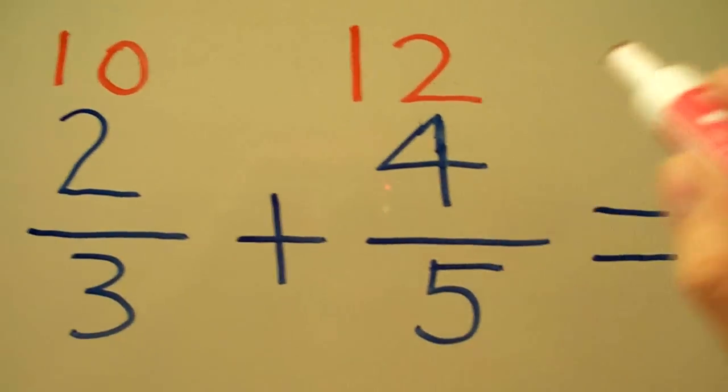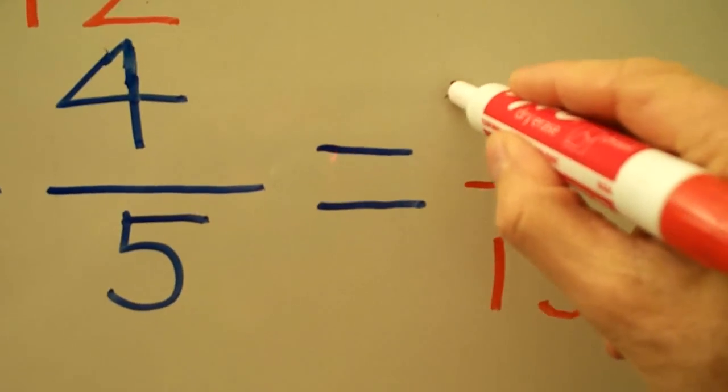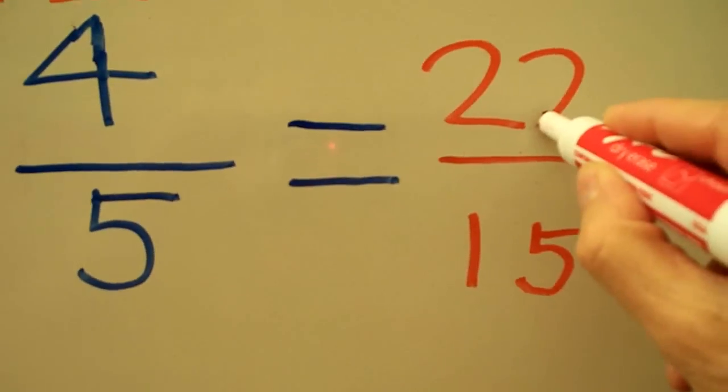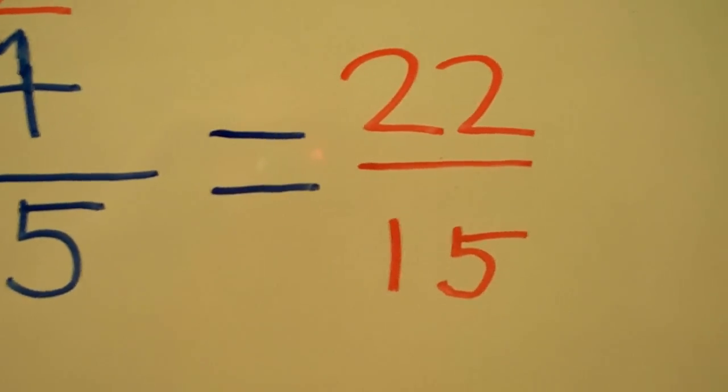We add our ten and twelve together to get twenty-two, so that we now have the improper fraction twenty-two-fifteenths.